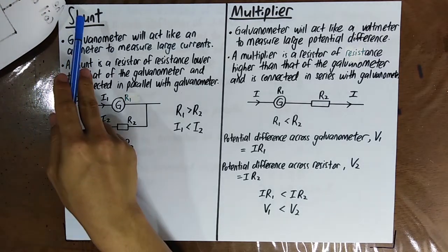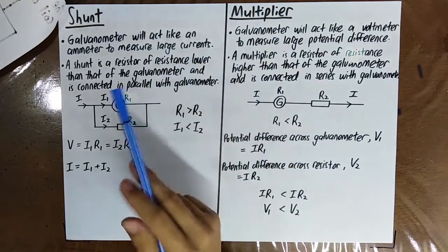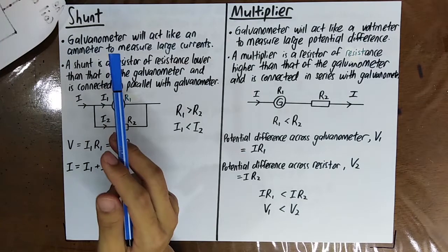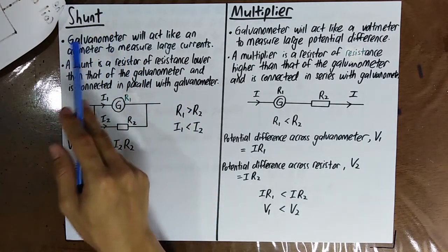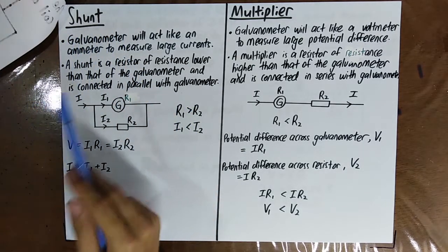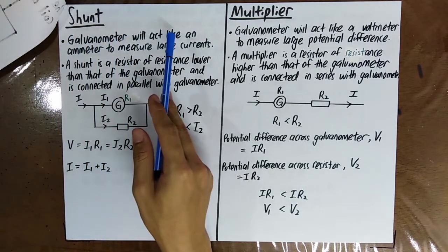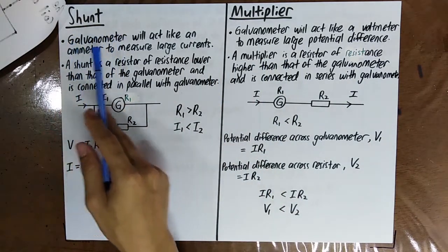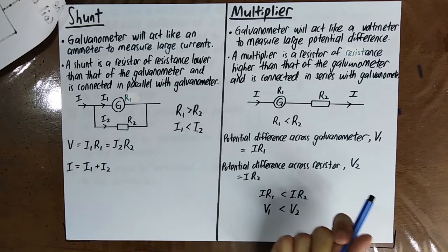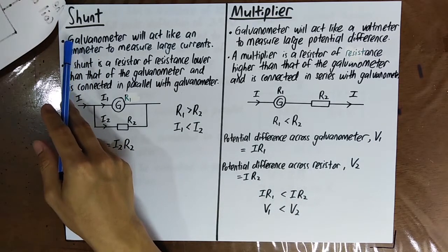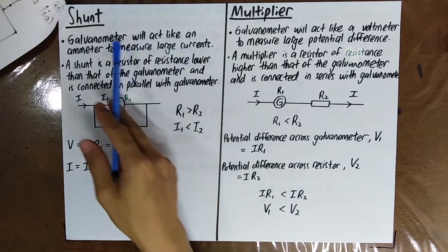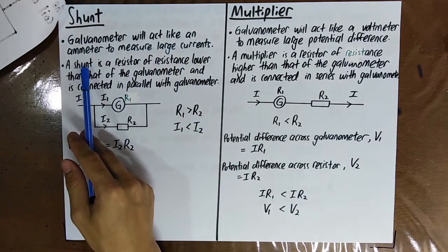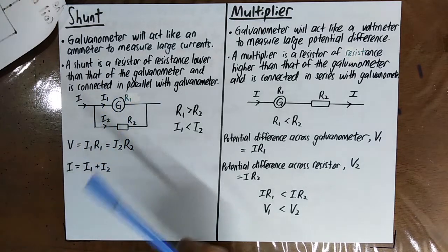Both shunt and multiplier are just resistors. You already know voltmeter and ammeter, but the galvanometer has not been introduced yet. A galvanometer can act like both an ammeter and also a voltmeter — that is, we can use a galvanometer to measure potential difference and also current. If you want to use the galvanometer to measure very large currents, you have to use a shunt so that your galvanometer does not burn out.